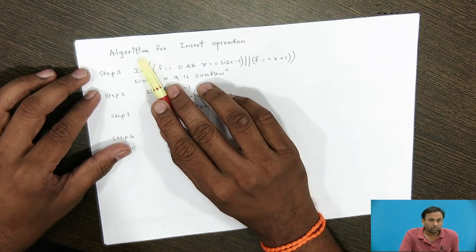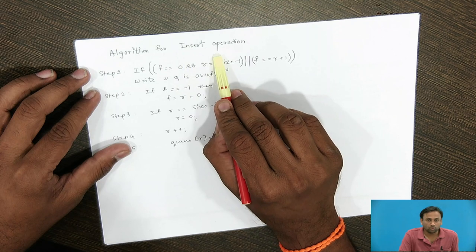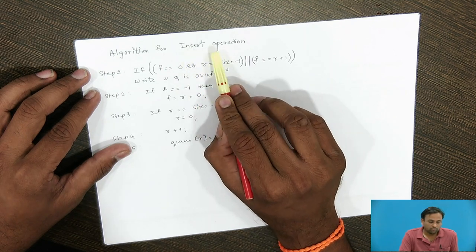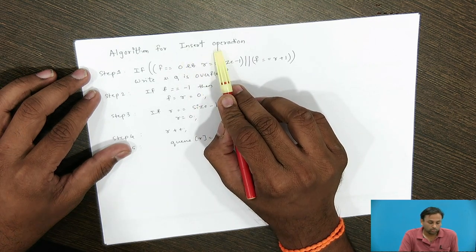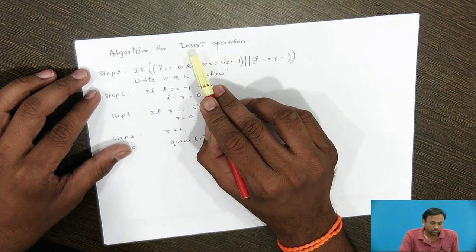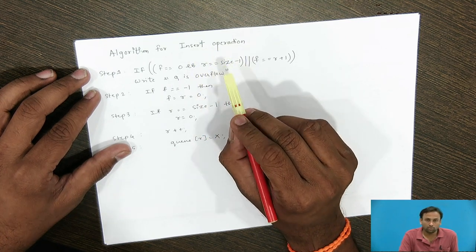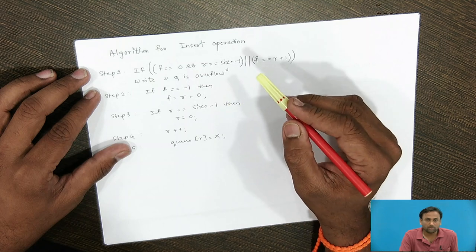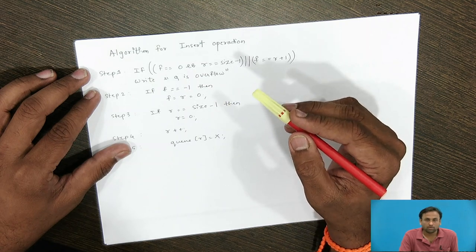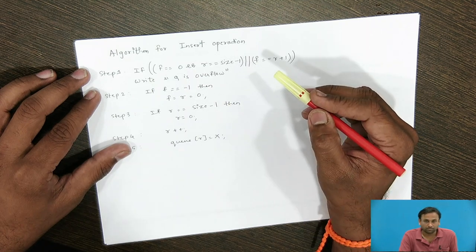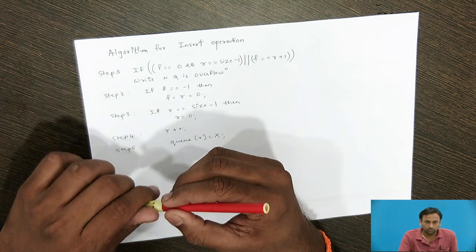First we are going to see the algorithm for the insert operation. In the same manner as studied in the linear queue, for the insert operation we are going to check the full condition. Similarly, if we are going to delete elements, we are going to check the empty condition.